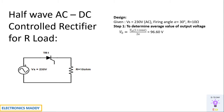The first step is to determine the average value of output voltage, which is given by this formula. We will be substituting the value of alpha and finding the value of output voltage. One of the most commonly made mistakes is that Vm should be substituted as 230 into root 2. So be careful with that.